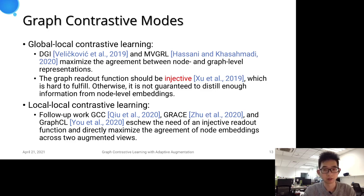The local-to-local contrastive learning, for example, follow-up work GCC, GRACE, and GraphCL, eschew the need of an injective function and directly maximize the agreement of node embeddings across two augmented views.